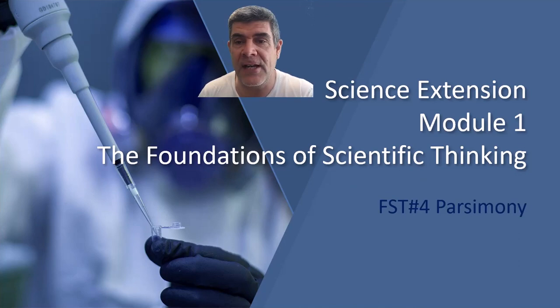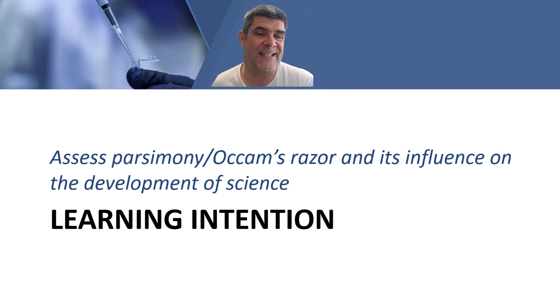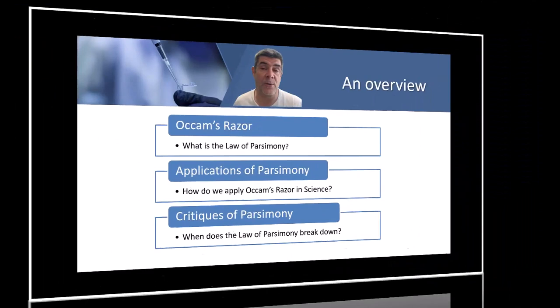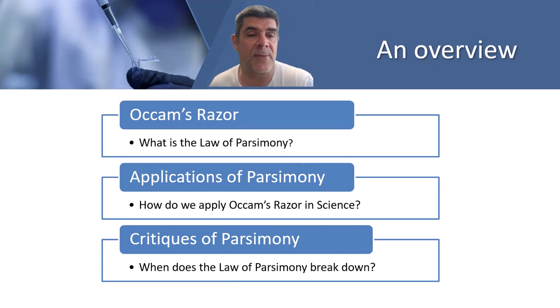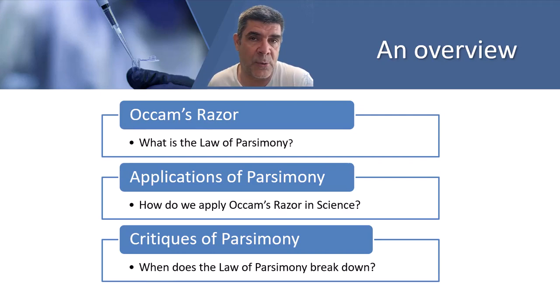Hi students, welcome to Science Extension and Module 1, The Foundations of Scientific Thinking. This is video number 4. We're going to be looking at the principle of parsimony or Occam's razor. We need to assess parsimony or Occam's razor and its influence on the development of science, including some applications and some of the critiques — where does this law or principle break down?